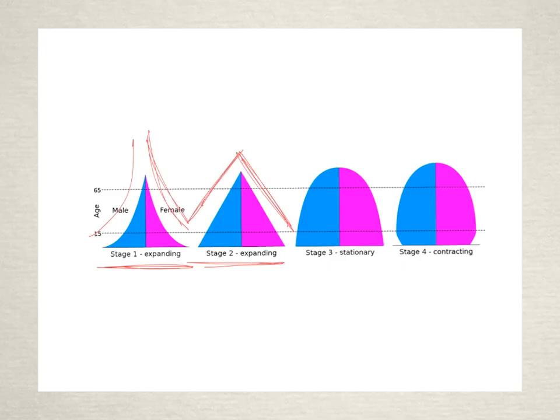Stage three, we have stationary. So the population is not actually increasing and people are naturally dying as they get older and the numbers are pretty much staying the same. They're at a similar rate.